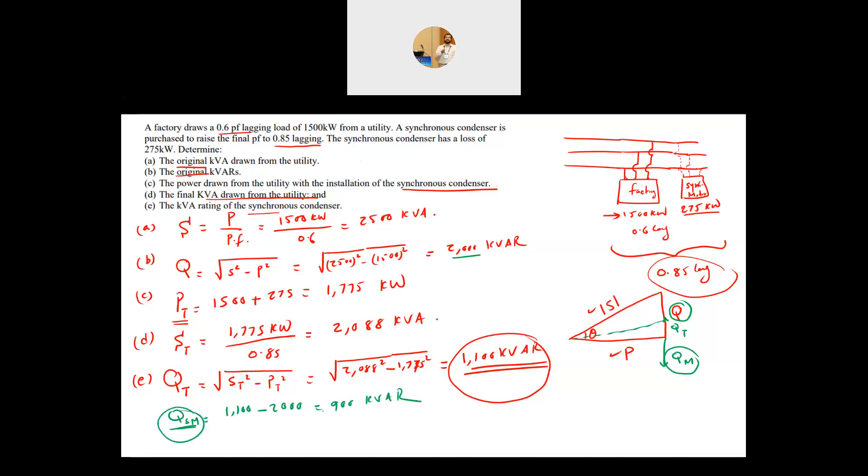This is how much Q is coming from basically your synchronous motor and it is basically minus because it provides reactive Q. So your S of the synchronous motor equal to the P square of the motor which is 275 square plus -900 square and this will give me 941.1 kVA. So that is the total S of your synchronous motor.